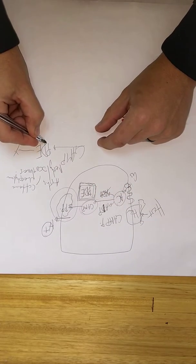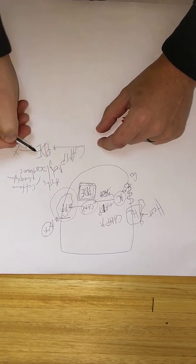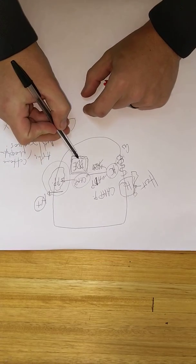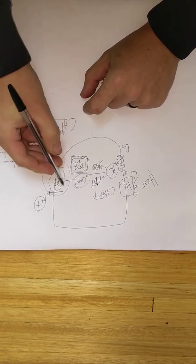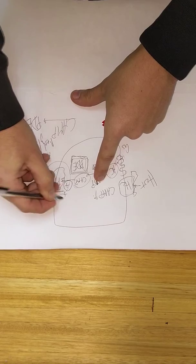So phosphodiesterase is responsible for breaking down cyclic AMP. If we have less phosphodiesterase, cyclic AMP won't be broken down, and we have more stimulation happening and more acid being secreted.